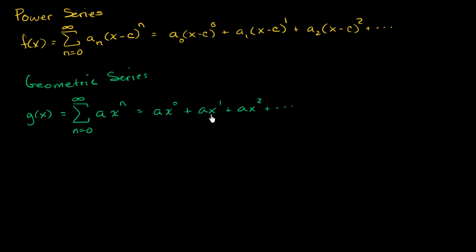So under what conditions does that happen? Well, this converges if each of these terms get smaller and smaller and smaller. And each of these terms get smaller and smaller and smaller if the absolute value of our common ratio, the absolute value of our common ratio is less than 1.